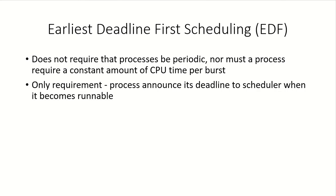EDF does not require that the process is periodic or that it uses a constant amount of CPU burst time — though we assumed that in this example. The only requirement for this scheduling algorithm is that whenever a process enters the system, it needs to announce its deadline to the scheduler. Based on the deadline, the scheduler then decides whether the currently running process should be preempted or not.